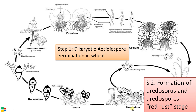The second stage is the formation of a specialized structure called the uredosorus, on which uredospores are formed. These uredospores are red in color, so this stage is called the red rust stage in wheat. It is also called the summer stage because the season of infection is during summer.